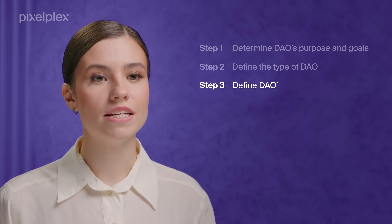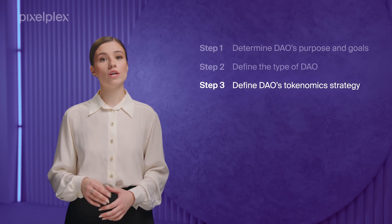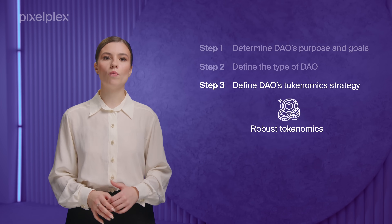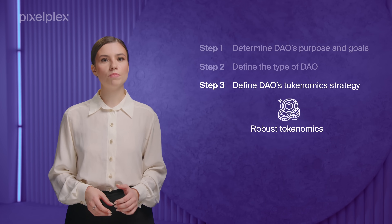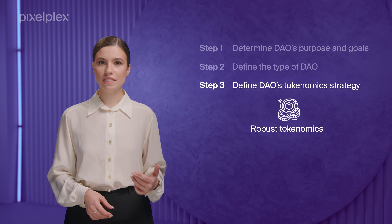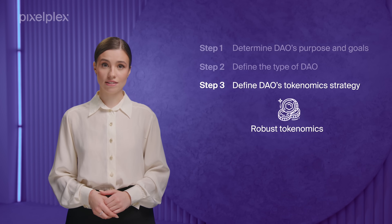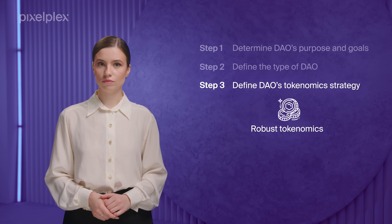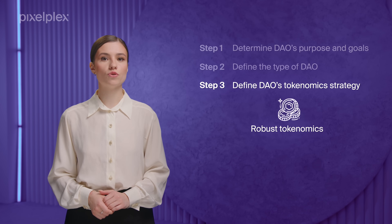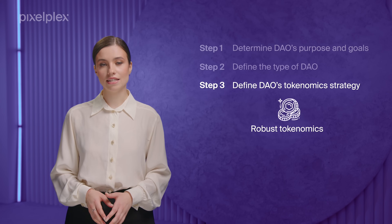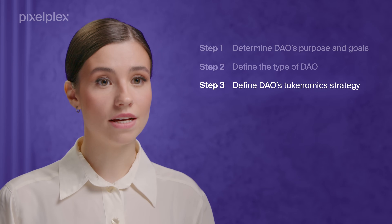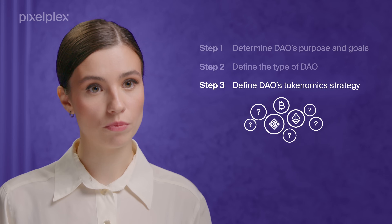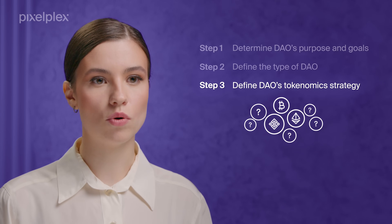Then you need to define the tokenomics strategy. To attract users and investors, you should clearly state how your DAO will accumulate revenue, and explain the terms and conditions for participating in the project's financial activities. This includes the token distribution model, rules regarding contribution to liquidity pools, staking, lending, and more. Besides this, you should determine what tokens and coins, apart from the DAO's native token, will be supported.